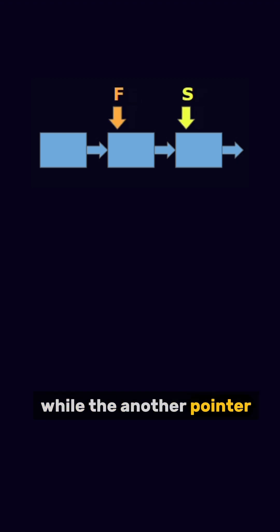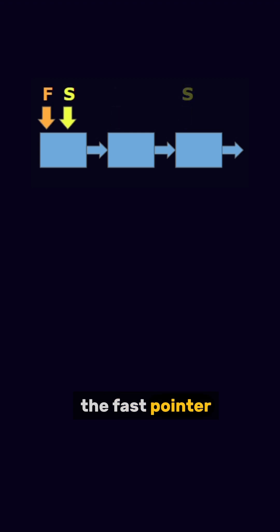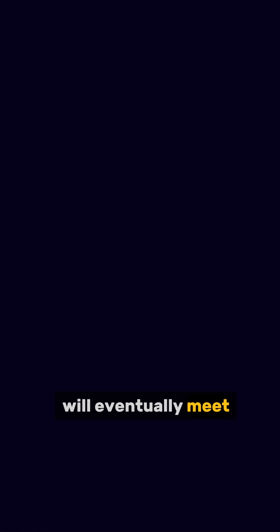while another pointer moves two steps at a time, the fast pointer. If there is a cycle, the fast pointer will eventually meet the slower pointer.